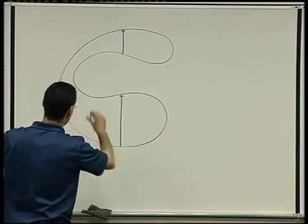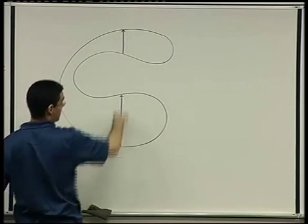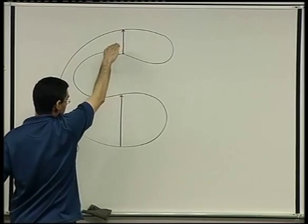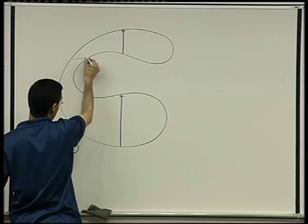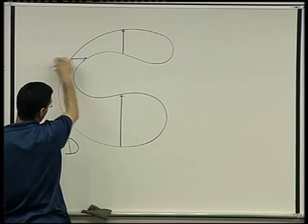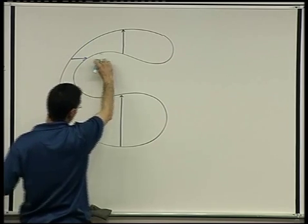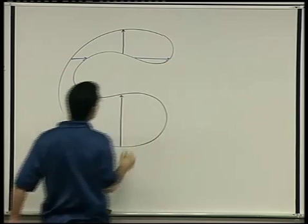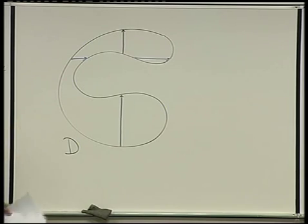Likewise, it's not simple with respect to y. If I fix a particular y, the x-values should be between a left function and a right function. But again, for certain y values, I go out the right side and then come back into the domain. So this C-shaped domain is not simple in either sense. However, it can be broken up into a finite union of simple domains.